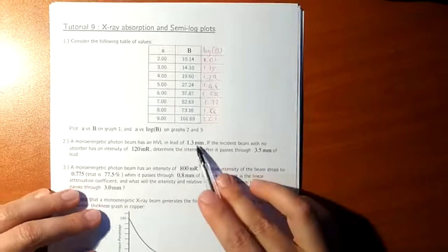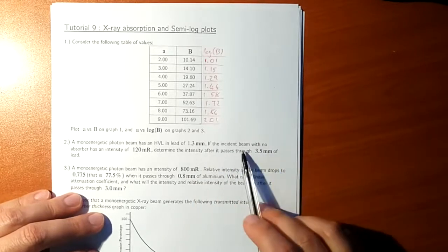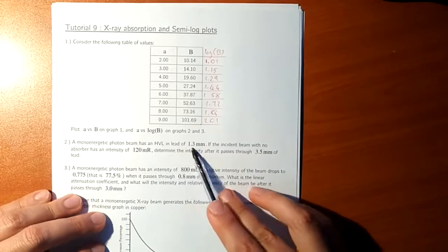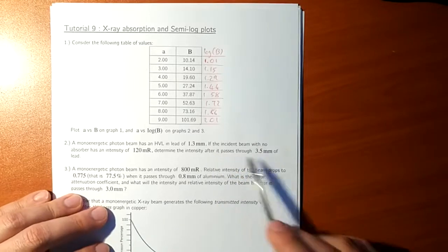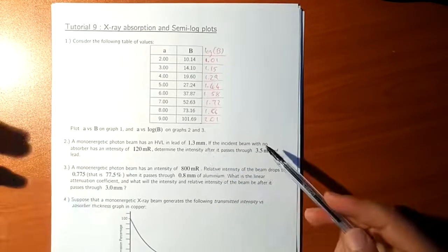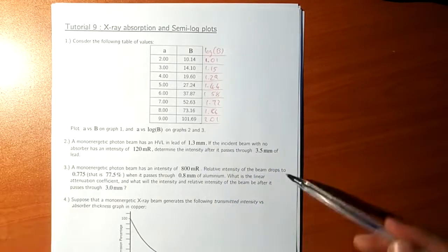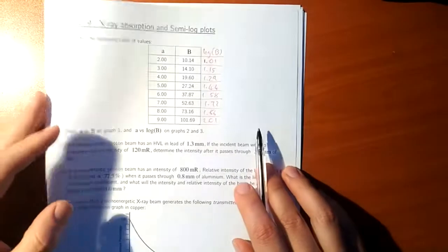Determine the intensity after it passes through 3.5 mm of lead. So this is what it was initially. Now, this is if you know the half value layer, this is quite an easy calculation. We know how much it takes for it to halve, only 1.3 mm of lead. So if it passes through 3.5 mm of lead, how many times does it halve? If the HVL is 1.3 mm and it passes through twice that, 2.6 mm, then it will halve twice. Or if it passes through 3 times that, 3.9 mm, it will halve three times. But 3.5, it's not as simple as that. We can't do it in our heads, we have to calculate it.